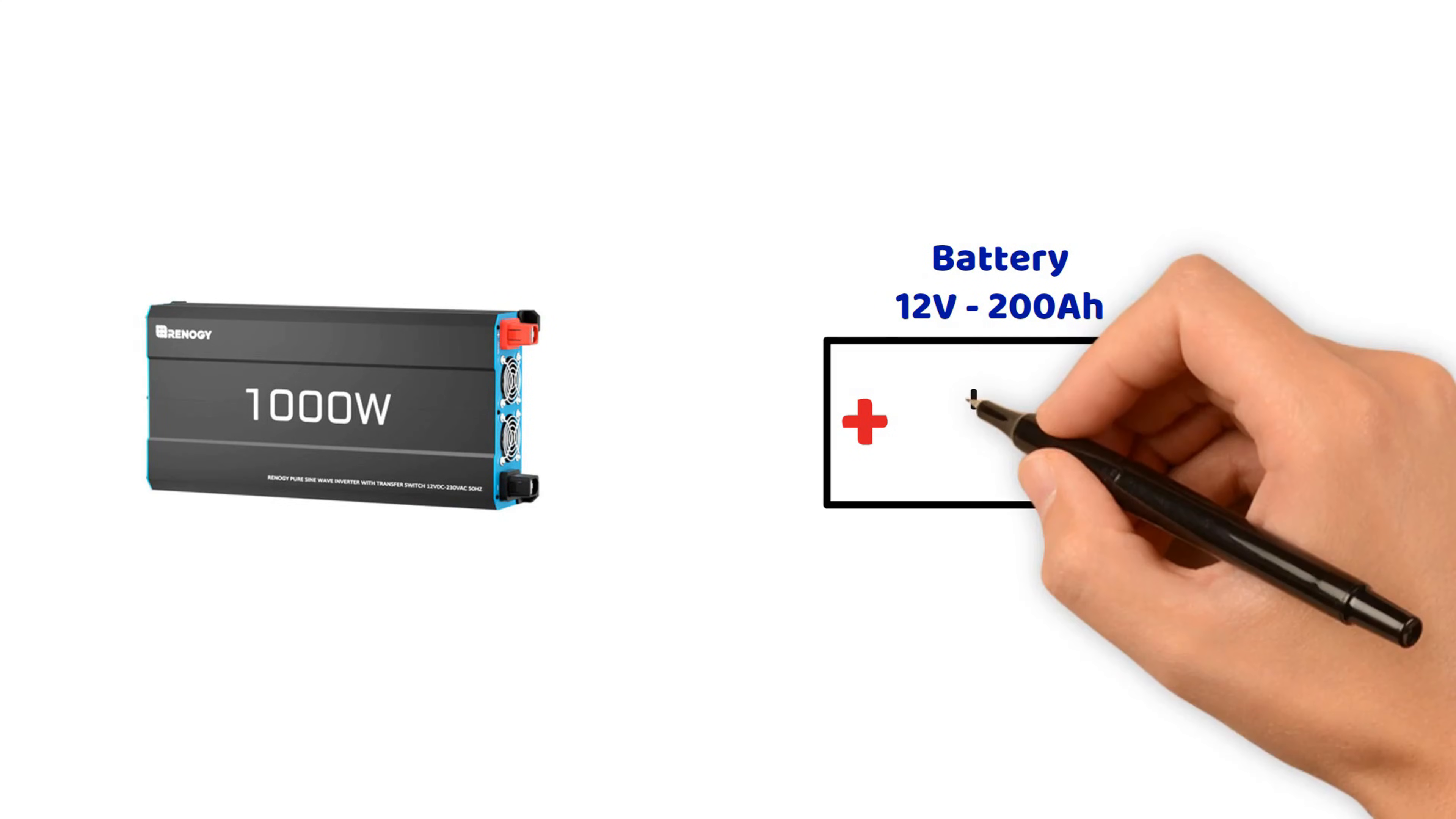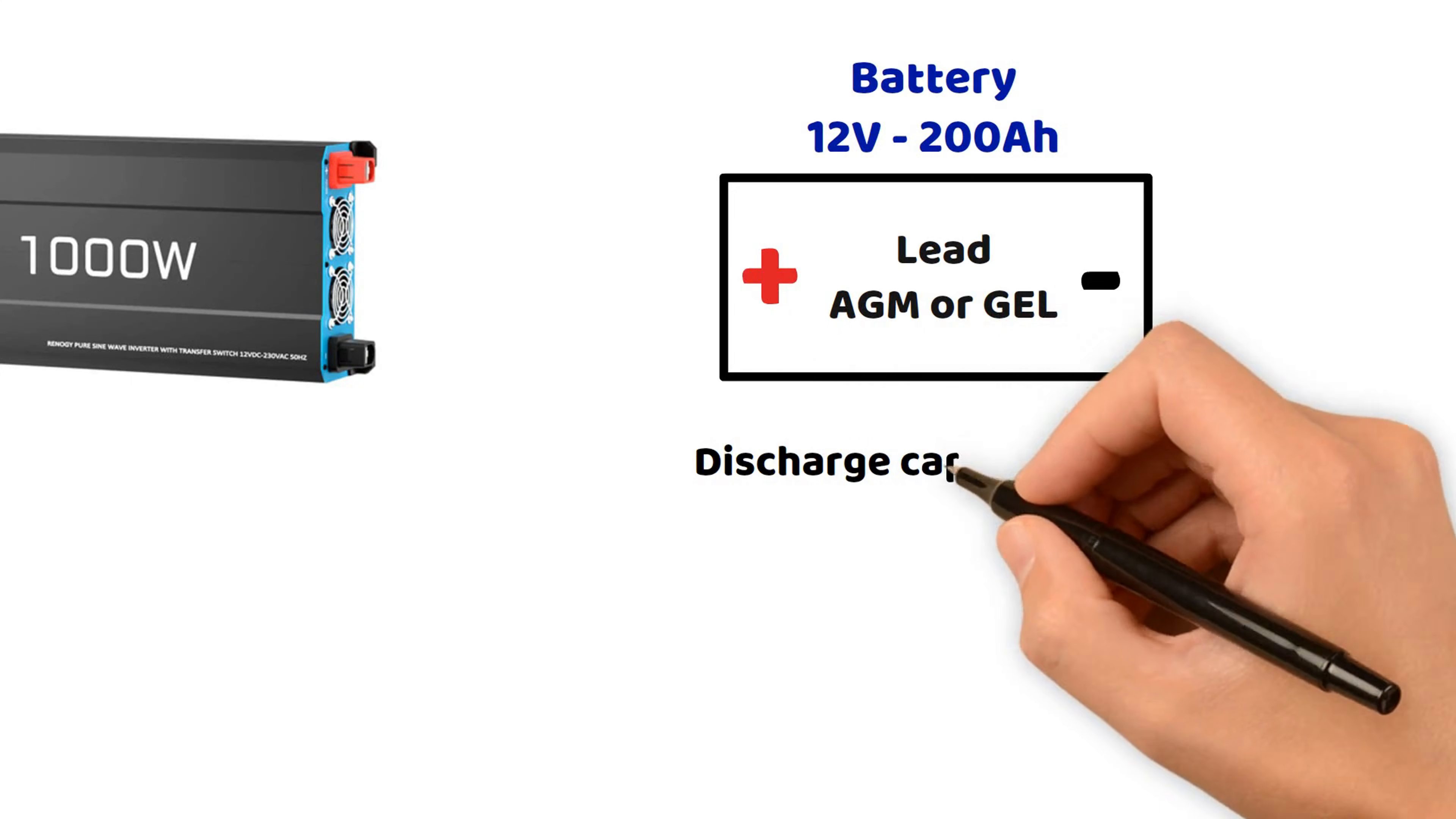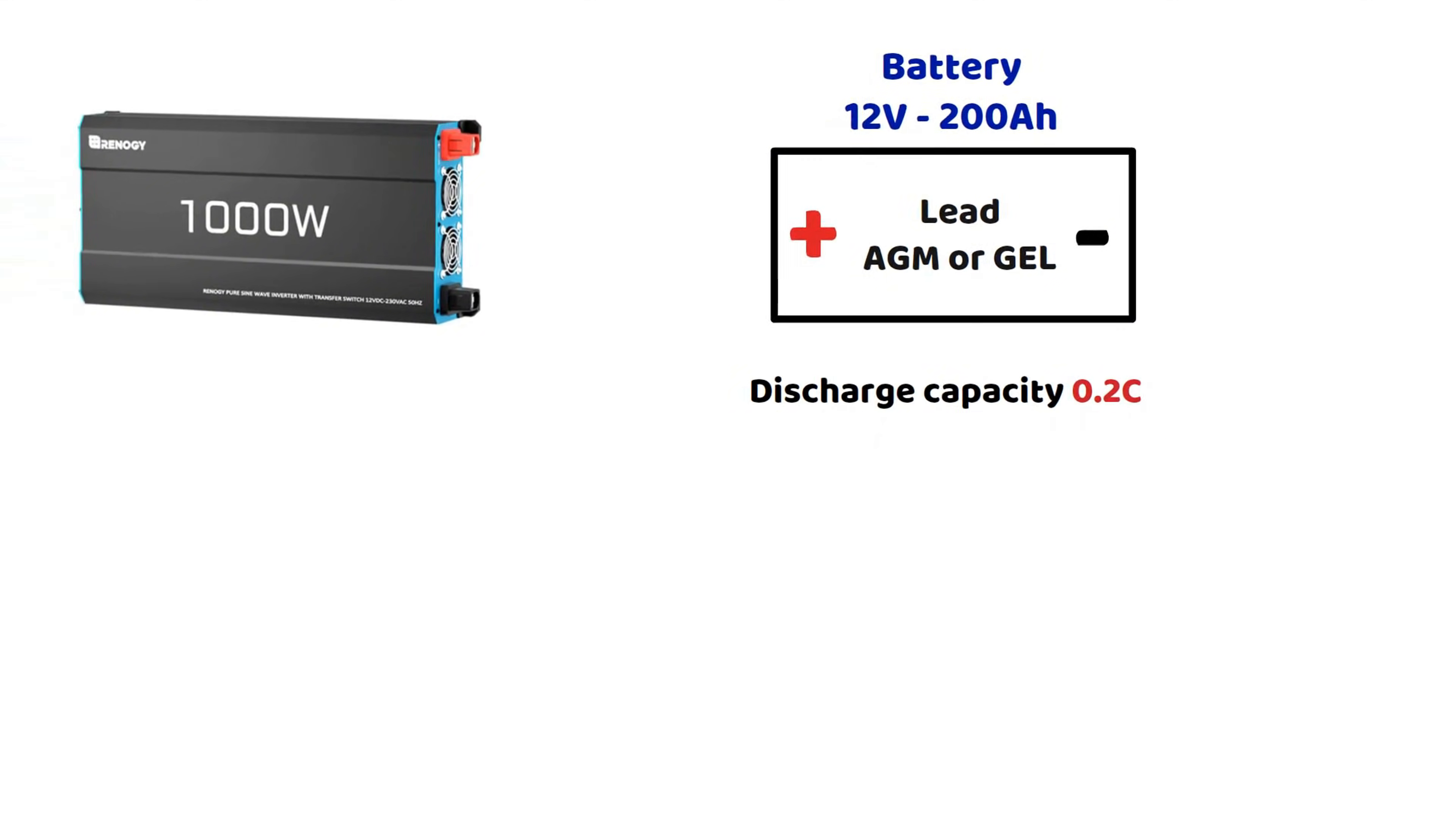This type of battery has a recommended discharge rate of 0.2C, which means 20% of its nominal capacity per hour. I will make a dedicated video about the C-rate soon. So the calculation is simple: 0.2C multiplied by 200 ampere hours equals 40 amperes.